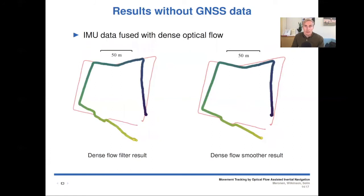Then we have results without using any GNSS location data. And here IMU data is fused just with the dense optical flow. On the left, we have the filter results. And on the right, we have the smoother results. And we can see that the shape of the track is recovered quite well, but the scale is a little bit too small.